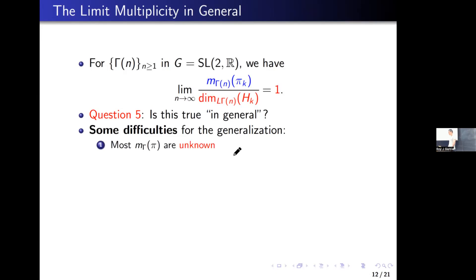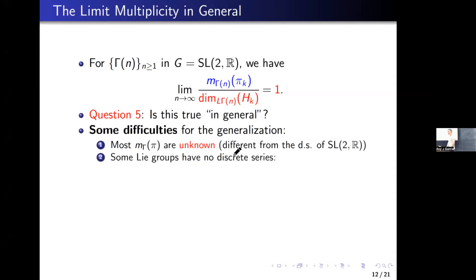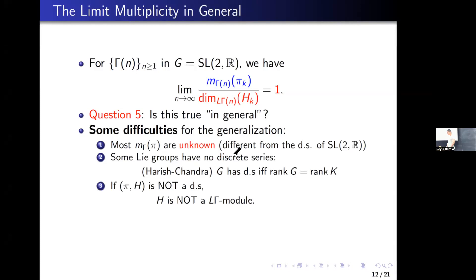There are some difficulties for generalization. First, most multiplicities M_gamma(pi) are unknown — quite different from what we have for discrete series of SL2R. Second, some Lie groups have no discrete series. Harish-Chandra proved a Lie group has discrete series if and only if the rank of G equals the rank of K, where K is the maximum compact subgroup of G. Third, if pi is not a discrete series, the underlying Hilbert space is not an L(gamma)-module, so we cannot expect any von Neumann dimension.